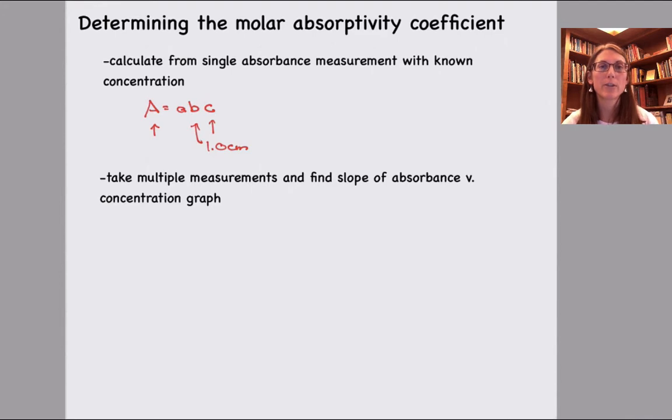An even better way to calculate the molar absorptivity coefficient is to create a Beer's Law plot, which is what we did in lab. And in a Beer's Law plot, you're graphing absorbance versus concentration, and you're going to measure that concentration, or excuse me, measure the absorbance for four or five or six or more different concentrations of the solution. That allows you to find a line of best fit, and the slope of that line of best fit is your molar absorptivity coefficient.